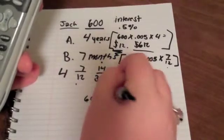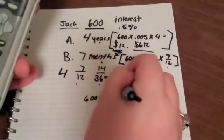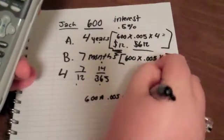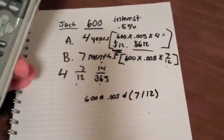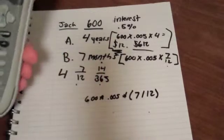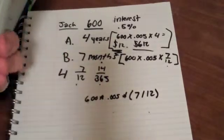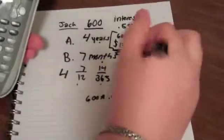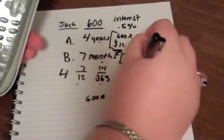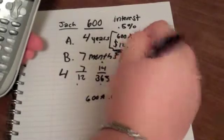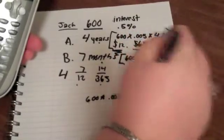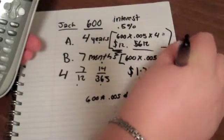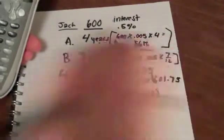7 divided by 12, close parentheses. That's what it looks like. Hope you can see that. Okay, so your answer is $1.75. If they were to ask you for the maturity value, you would put $600 and $1.75 cents. $601.75.